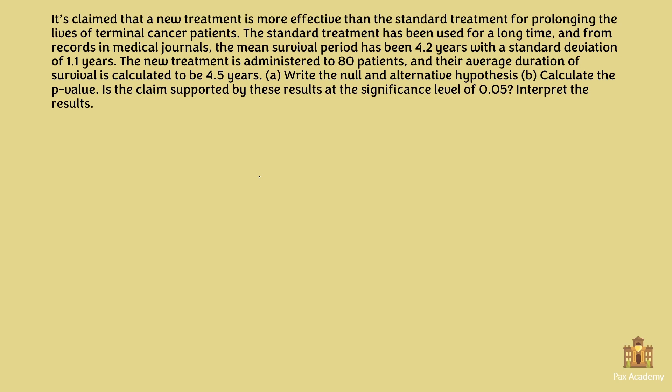Today let's use the p-value method to solve this hypothesis testing exercise. The question reads: it's claimed that a new treatment is more effective than the standard treatment for prolonging the lives of terminal cancer patients. The standard treatment has been used for a long time and from records in medical journals, the mean survival period has been 4.2 years with a standard deviation of 1.1 years. The new treatment is administered to 80 patients and their average duration of survival is calculated to be 4.5 years. Write the null and alternative hypotheses, calculate the p-value. Is the claim supported by these results at the significance level 0.05? Interpret the results.